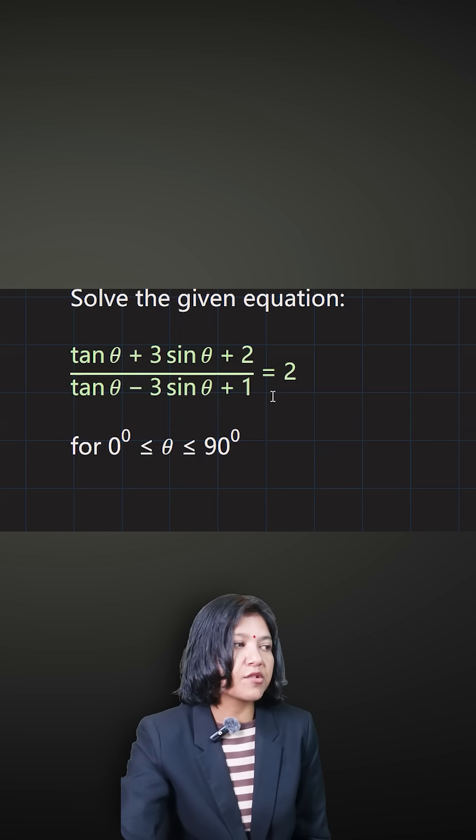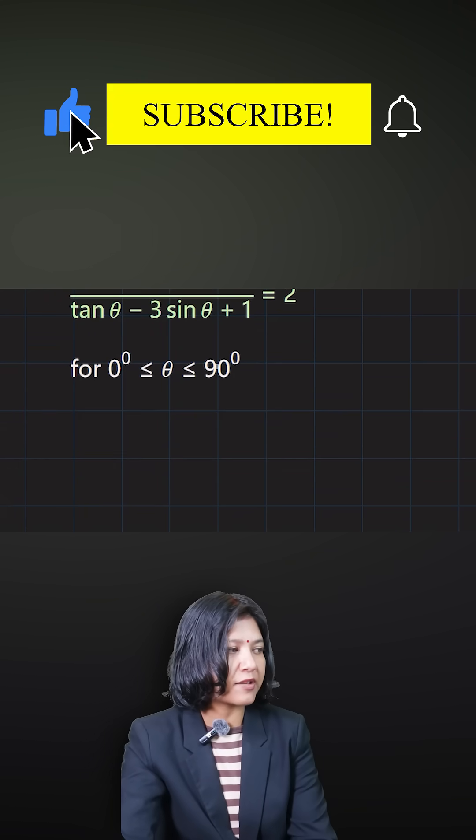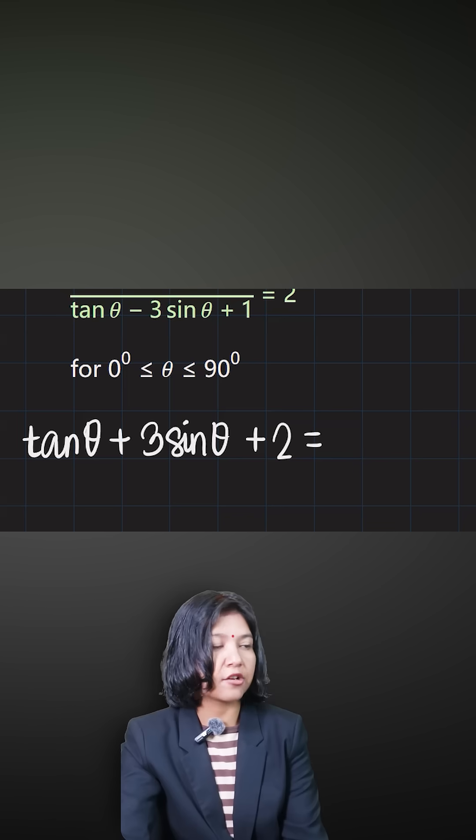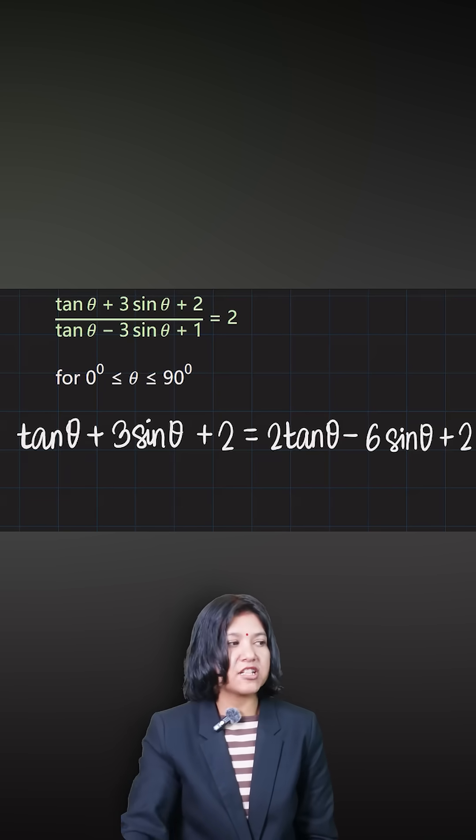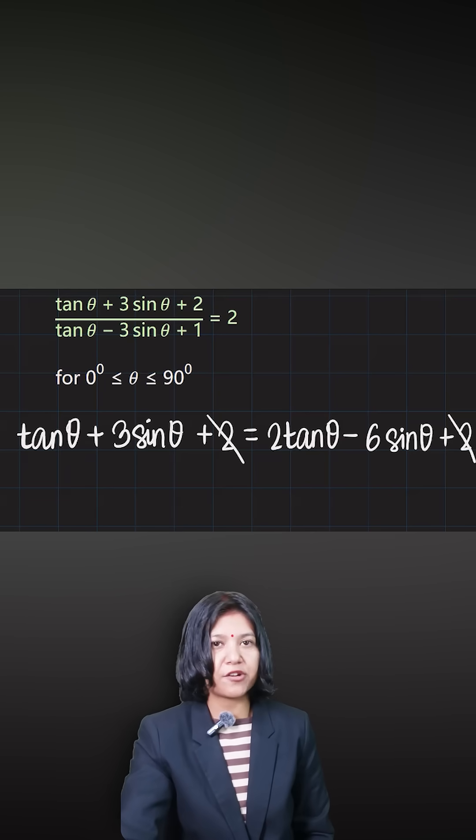What you do is you see one side has a fraction, so the quickest way is to cross multiply and get rid of the fraction. Tan theta - I'll copy the numerator as it is and cross multiply with the opposite denominator. After you cross multiply, you see there's a common term plus 2, and you can get rid of it.